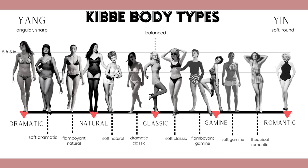There's also a space in between — so at the opposite ends you have the extremes, and in the middle we have different kinds of blends of the two types. Double curve can be found in four Kibbe body types: Romantic, Theatrical Romantic, Soft Gamine, and Soft Classic.